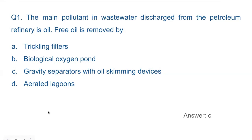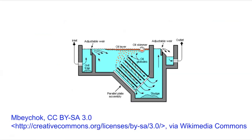The answer is C. The oil skimming system works as follows: oil is lighter than water, so it floats on top. The oil skimming device takes out the oil from the water surface, and what remains becomes water.